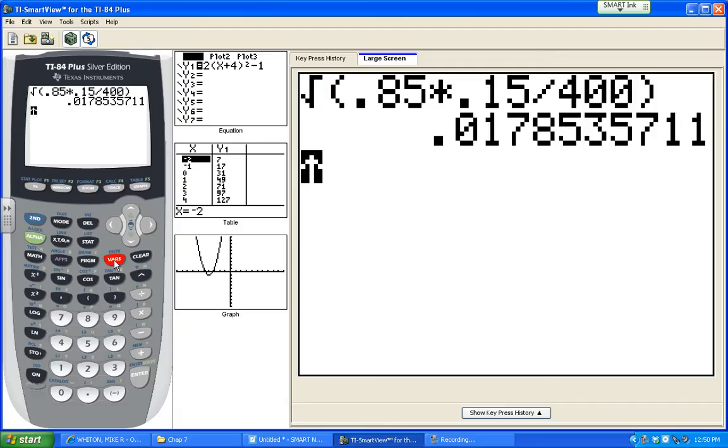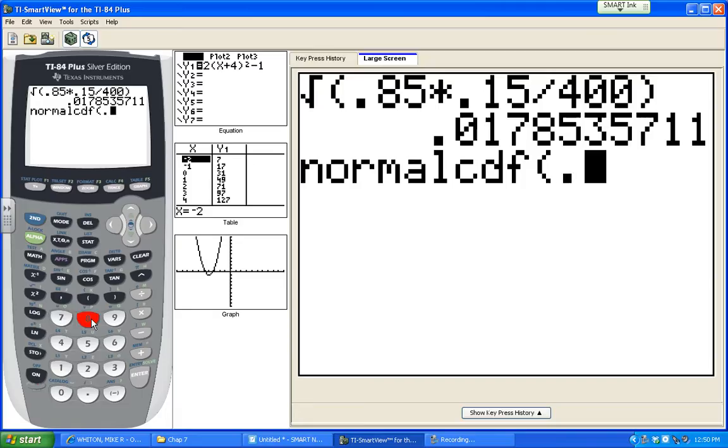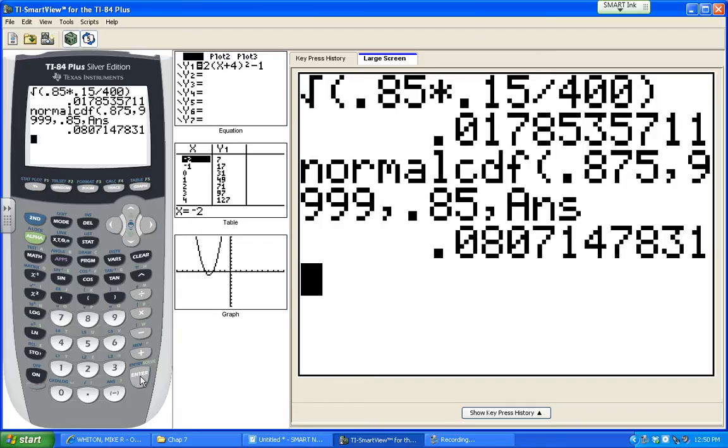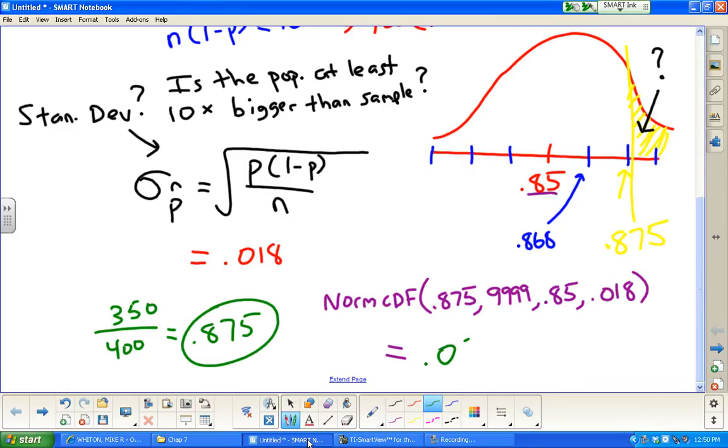I'm going to go into a normal CDF, second distribution. We're going from 0.875 all the way up to a big upper bound. We knew the mean was 0.85. The standard deviation is that 0.0178 that's in the previous answer, so I'm going to do this so it doesn't round it. That's going to be our answer: 0.08, so about 8%.